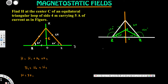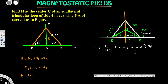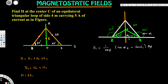Now let's do the calculations. H1 can be calculated using the formula: H1 equals I over 4π·ρ times (cos α2 minus cos α1), where α2 is the inside angle and α1 is the outside angle. We need to find cos α2, cos α1, and the distance ρ.